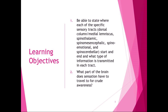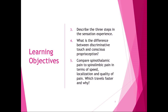We'll cover where these tracts start and end and what type of information is transmitted. We know that sensation has to go to the thalamus to have crude awareness. The three steps in the sensation experience are: encoding information from the periphery, sending it to the dorsal root ganglion, and projecting it up to the central nervous system. Discriminative touch is localized; conscious proprioception gives us information about where our body is in space.